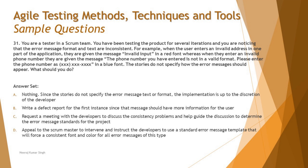The question says: you are a tester in a scrum team. You have been testing the product for several iterations and you are noticing that the error message format and text are inconsistent. For example, when the user enters an invalid address, they are given the message 'Invalid input' in a red font, whereas when they enter an invalid phone number, they are given a detailed message with the correct format — but in a blue font. So the inconsistency is clear: the phone number message is user-friendly but uses the wrong color, while the address message has the right color but is too brief.